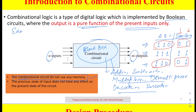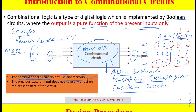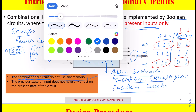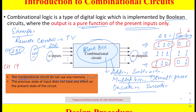Let us take the example of a remote control that we use for our televisions. Suppose you are watching channel number 205. We have a plus and minus button on the remote, and whenever the plus button is pressed, the next channel will be 206 — because the previous input was 205. Now suppose the channel you are watching is 190 and the same button is pressed. The output right now is going to be 191.